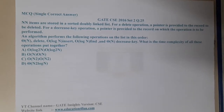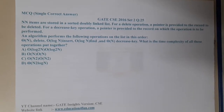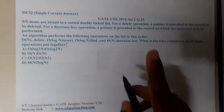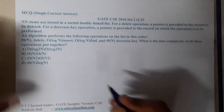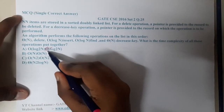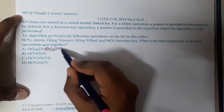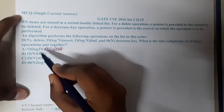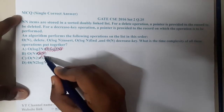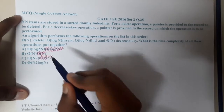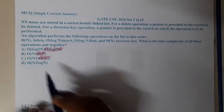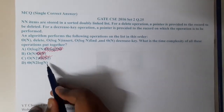Hello guys, you're back with our next lecture. So there is a small correction in the options — it is big O of log base 2 of n, similarly big O of n, and big O of n squared. There is no power; it wasn't written clearly. And this is big O of n squared log n.